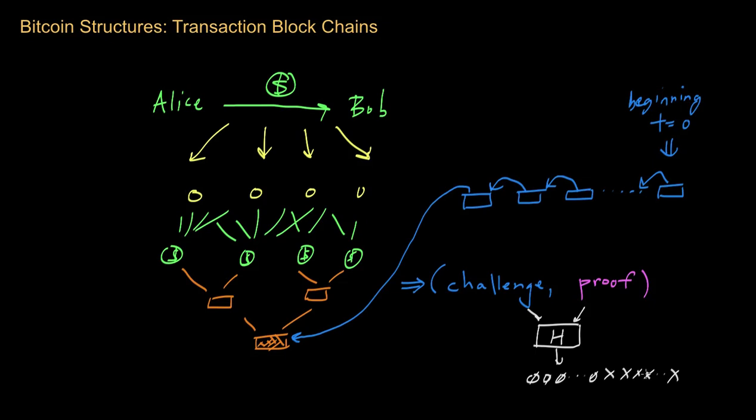The exact number of zero bits required in the Bitcoin protocol actually does change over time. It gets calibrated. It's designed so that on average, the average time taken across the whole system should be about 10 minutes. You want it to take about 10 minutes for at least one node to come up with a valid proof. But keep in mind that a lot of nodes are working on this proof concurrently.